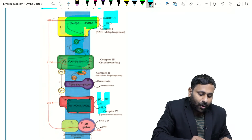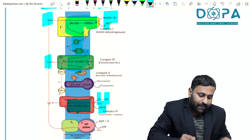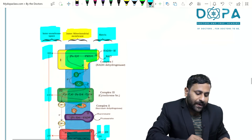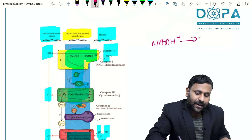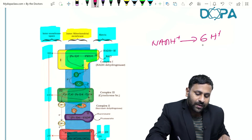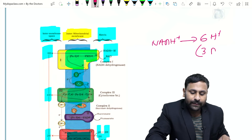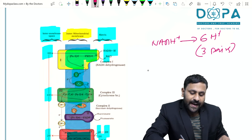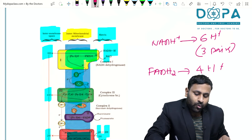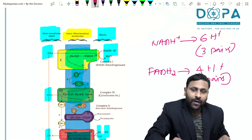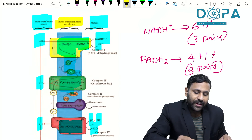As a result, protons accumulate within the outer space or inter membrane space. Oxidation of NADH + H⁺ pushes six protons — that is, three pairs of protons — into the outer space. Oxidation of FADH₂ pushes four H⁺, that is two pairs of protons, into the outer space.